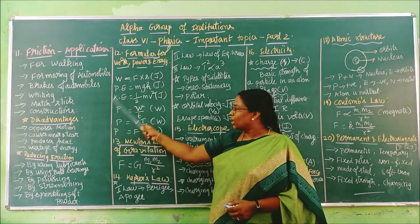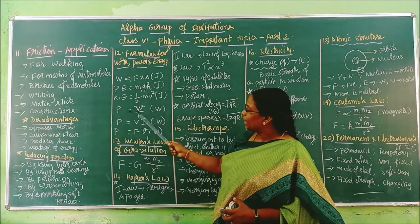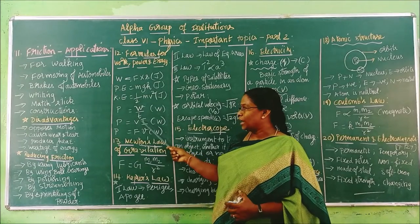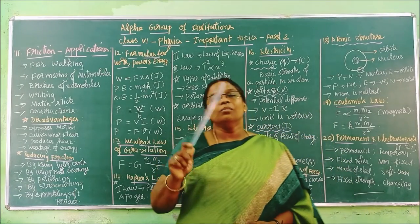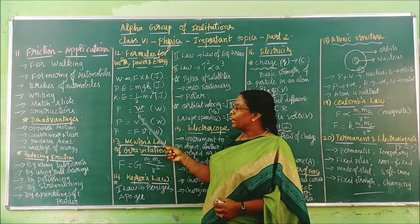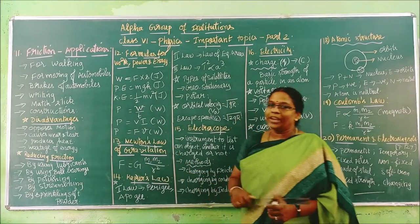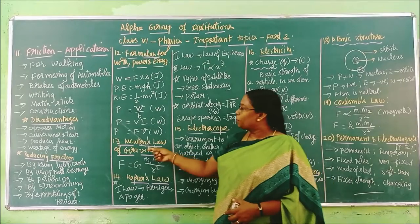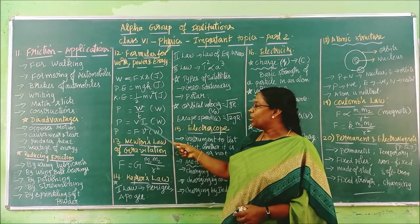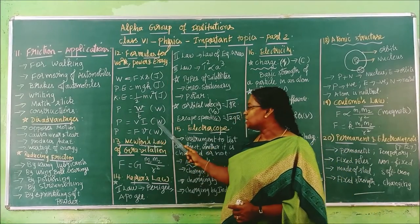Next we have power. There are three formulas for power. Power is equal to work done divided by time — P = W/T. Power's unit is watt. Also, power is equal to V times I, where V is voltage and I is current. The unit is also watt.